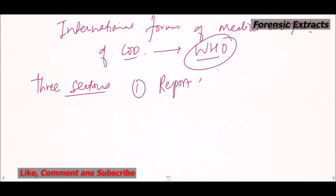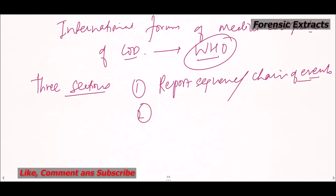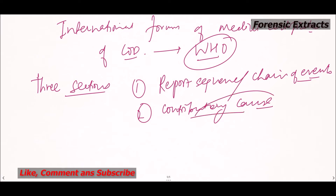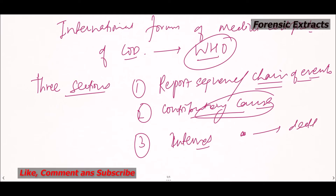Part one is the report sequence — the chain of events. The second is the contributory causes: other significant conditions which are contributing to the cause of death. The third column is the approximate interval between the onset of the condition and the death — the time interval that should be mentioned.